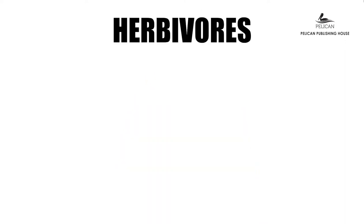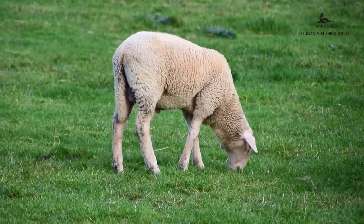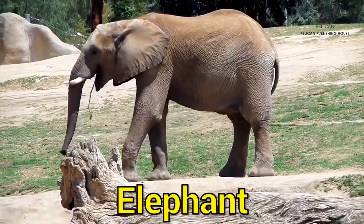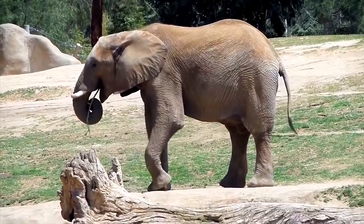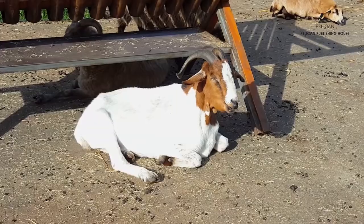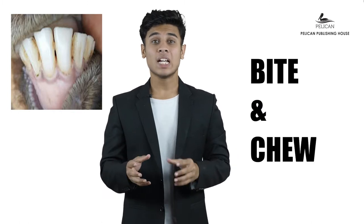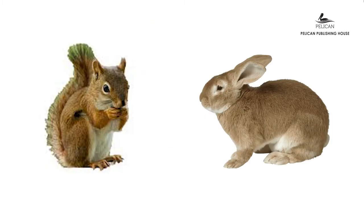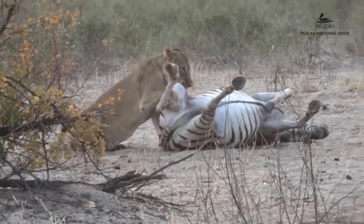We can classify animals into three groups according to what they eat: herbivores, carnivores, and omnivores. Herbivores are animals that eat only plants and plant material — they eat grass, leaves, fruits, etc. Elephants, cows, deer, and goats are herbivores. The teeth of a herbivore can bite and chew grass and leaves. Squirrels and rabbits have razor-sharp front teeth to crack open nuts and fruits. Birds like parrots use their beaks to break open nuts.